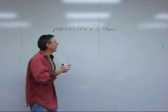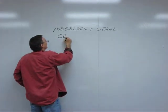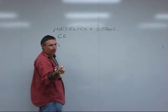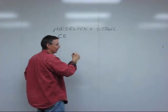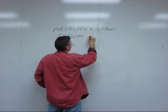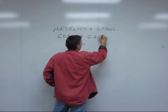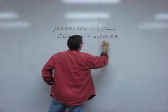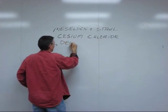They invented this technique in order to separate DNA labeled with different isotopes of nitrogen based on very slight differences in density. The technique is called cesium chloride density gradient centrifugation.